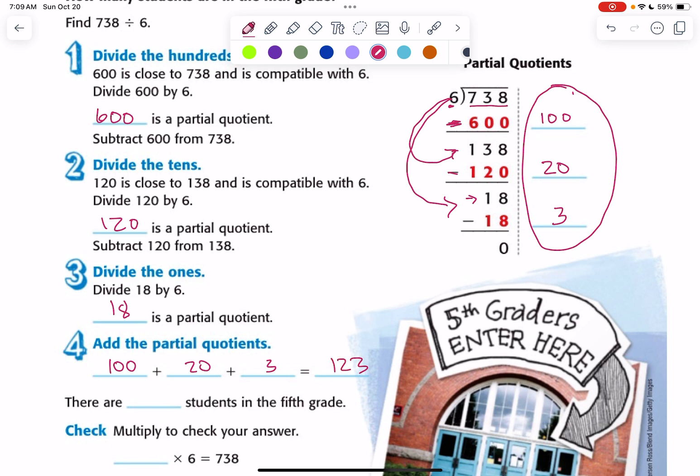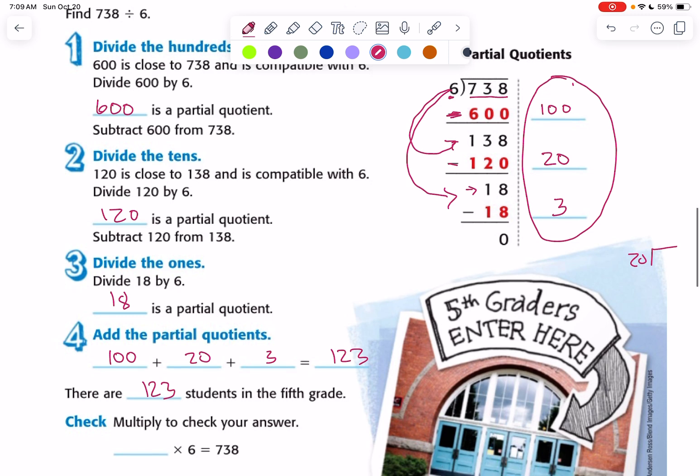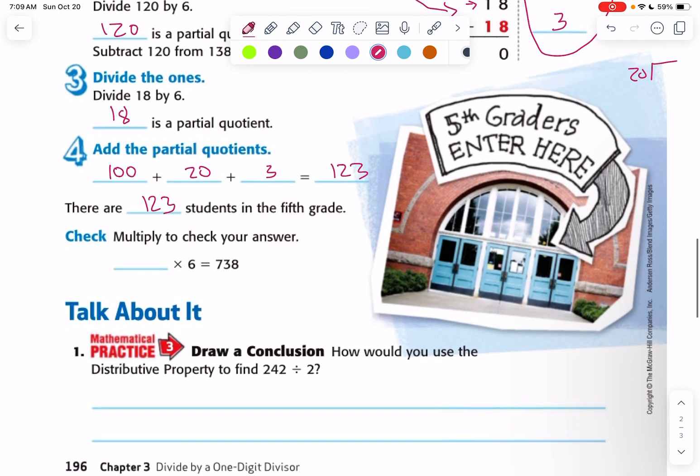So there are 123 students in the fifth grade. That is a really big school. So if we only have 20 students per grade, per class, it's like, wow, they need a new school. Because 123, that'd be, wow, that'd be like five, six classes of fifth grade.